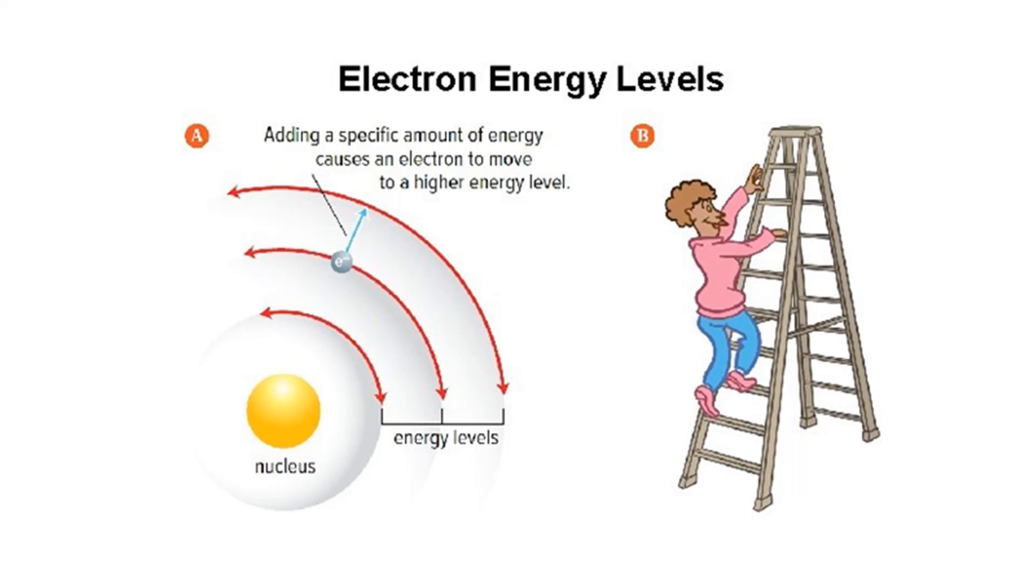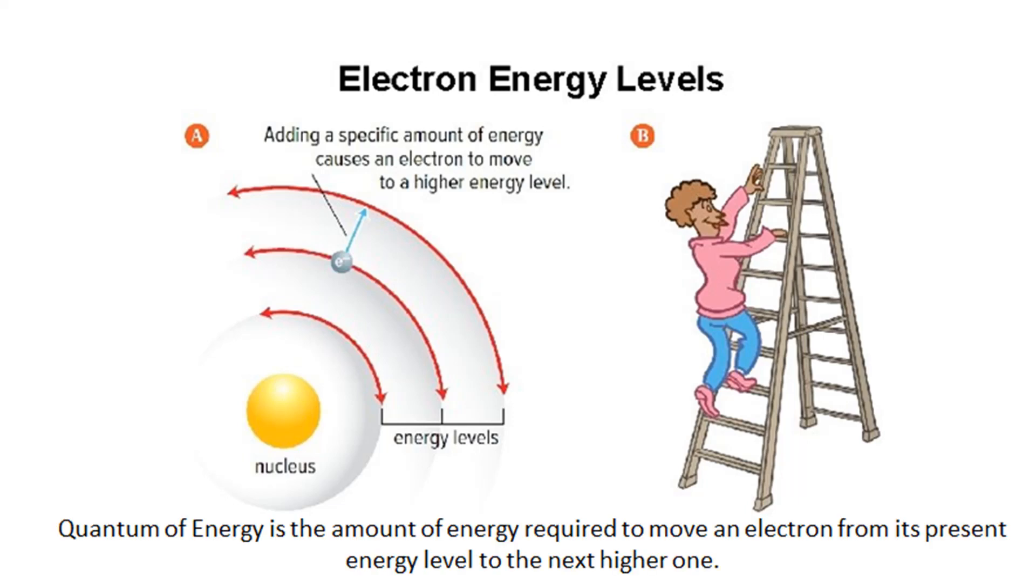To move from one rung to another, a person climbing a ladder must move just the right distance. To move from one energy level to another, an electron must gain or lose just the right amount of energy. A quantum of energy is the amount of energy required to move an electron from its present energy level to the next higher one. The energies of electrons are said to be quantized. The term quantum leap used to describe an abrupt change comes from this concept.